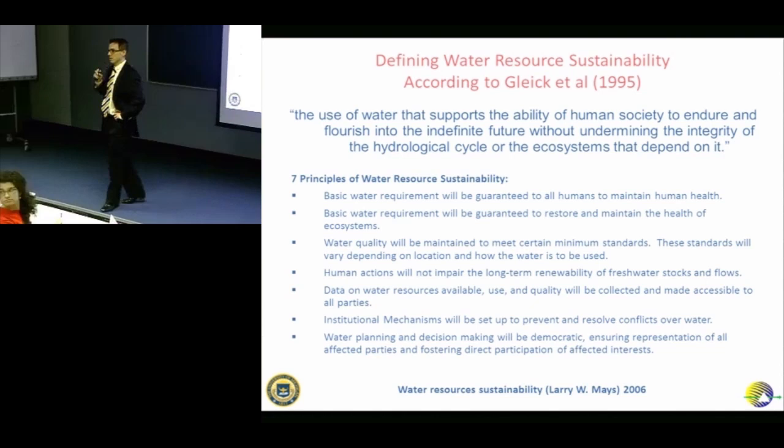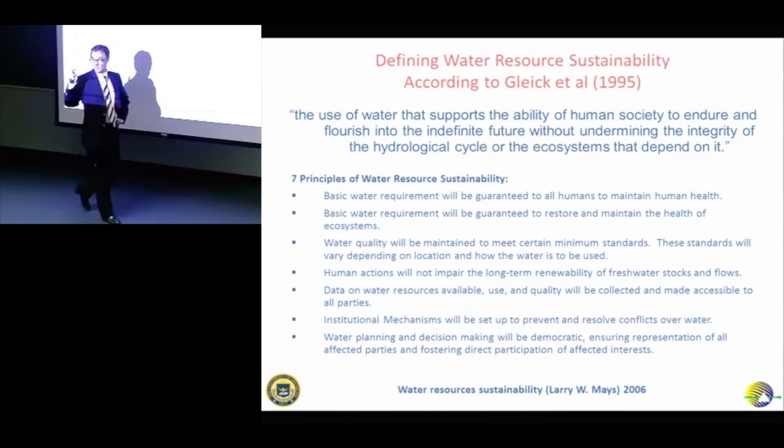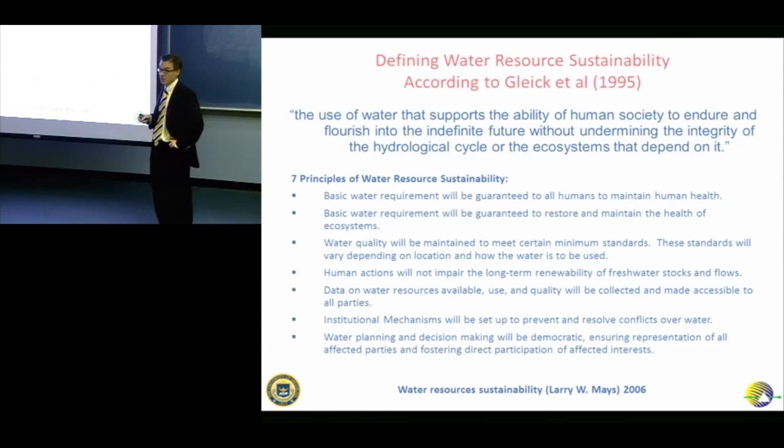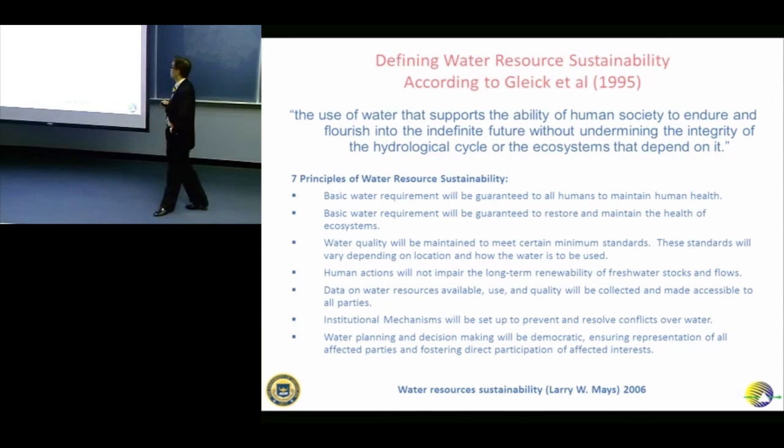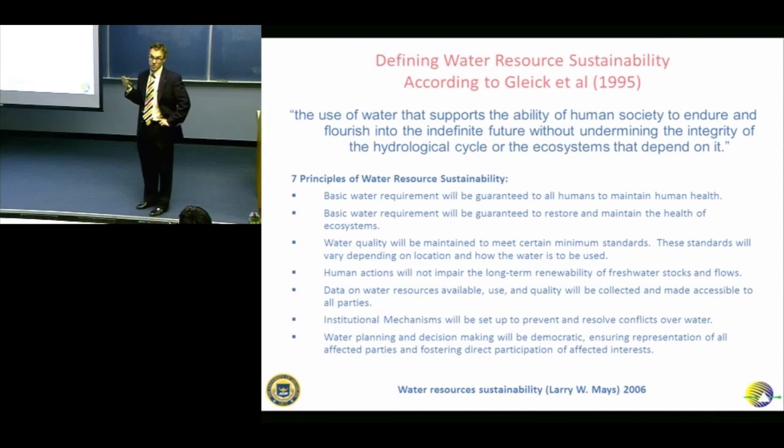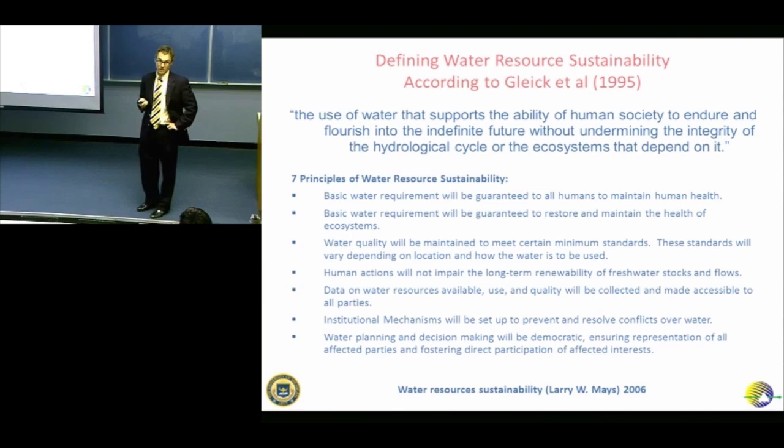Draining wetlands so aquifers can't recharge — excellent example. Pumping an aquifer dry. And climate change: a lot of populations get their water from meltwater. If the snowpack or glaciers disappear, those downstream populations face a serious concern. Great examples.